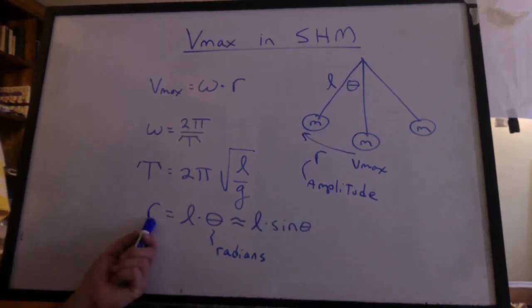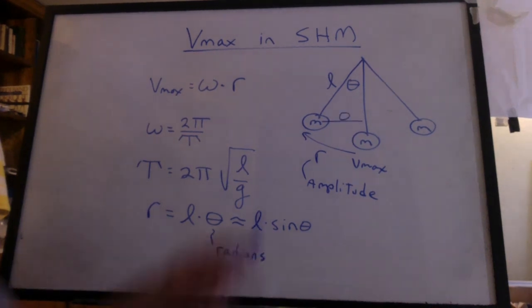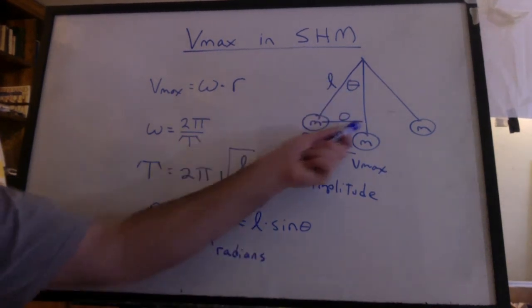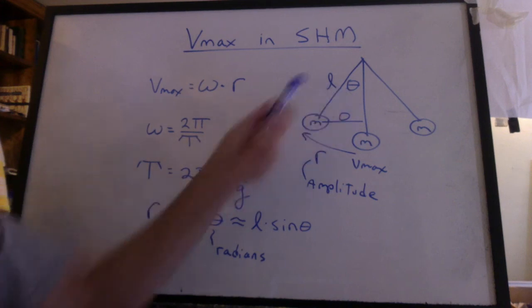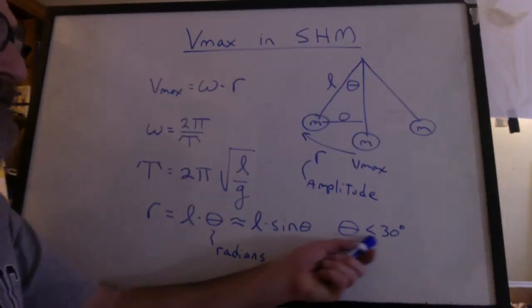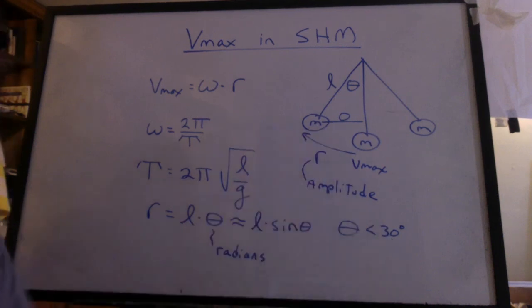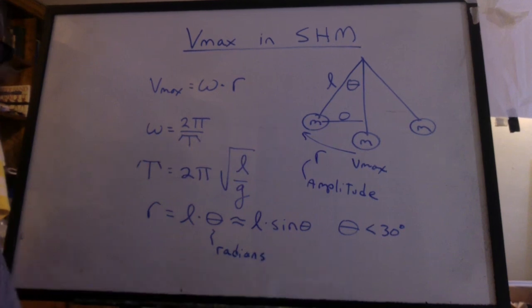And this is also equal to approximately l times sine theta. l sine theta is the opposite side. This distance is approximately equal to the arc length, as long as this angle is small. For our measurements, we're saying if theta is less than 30 degrees, it's a good approximation. As we've seen in class, if we get too big, that approximation starts to break down.